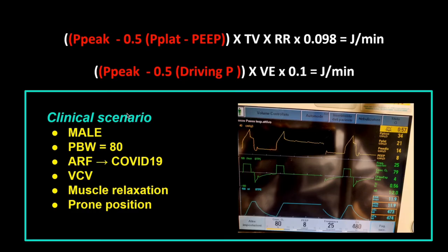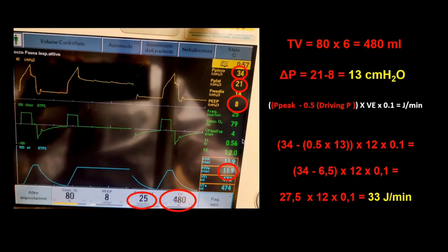Let's see an example using this formula. A male patient with a predicted body weight of 80 kg, COVID-19, on volume control with muscle relaxation and prone positioning. The tidal volume is 480 mL, driving pressure is 13, and minute ventilation is 11.9. Putting these values in, we get a mechanical power of 33 joules per minute.